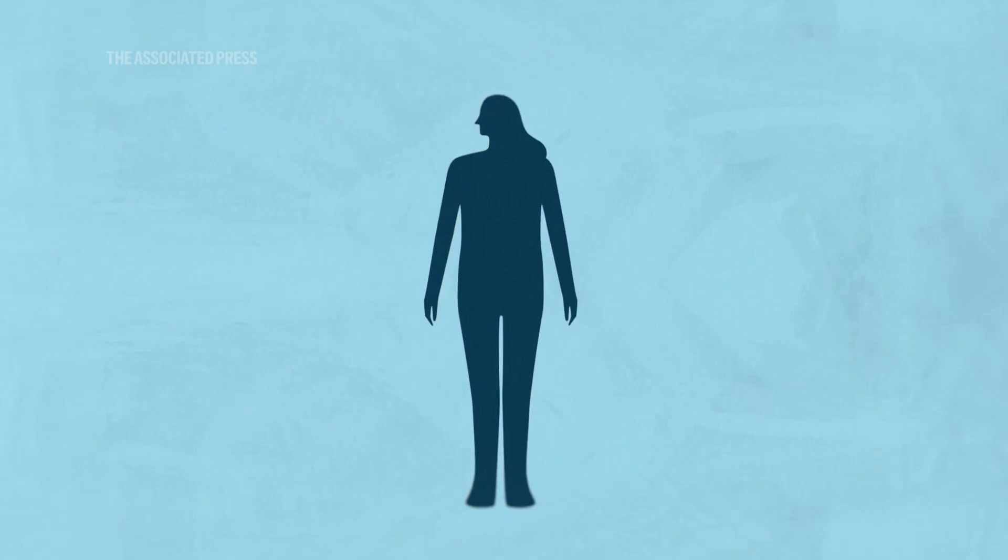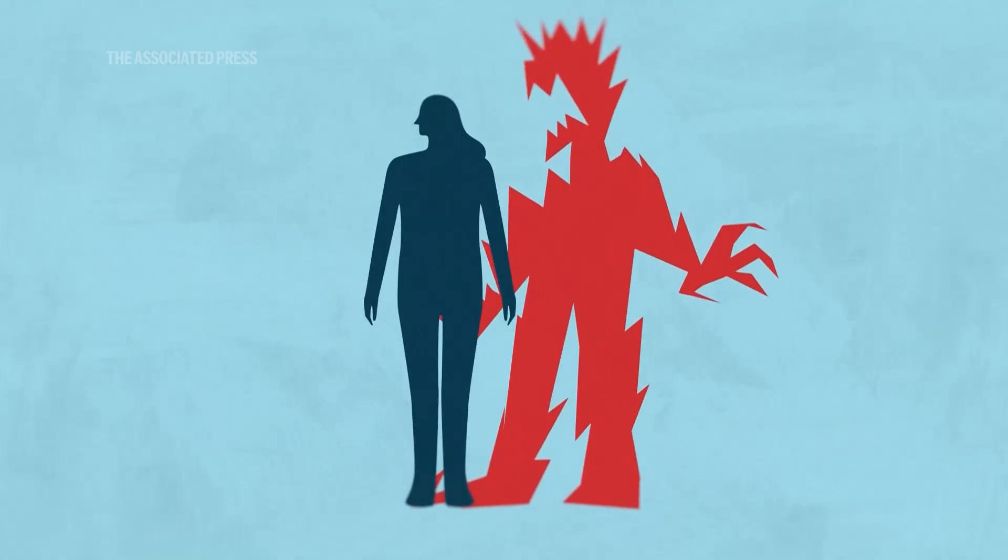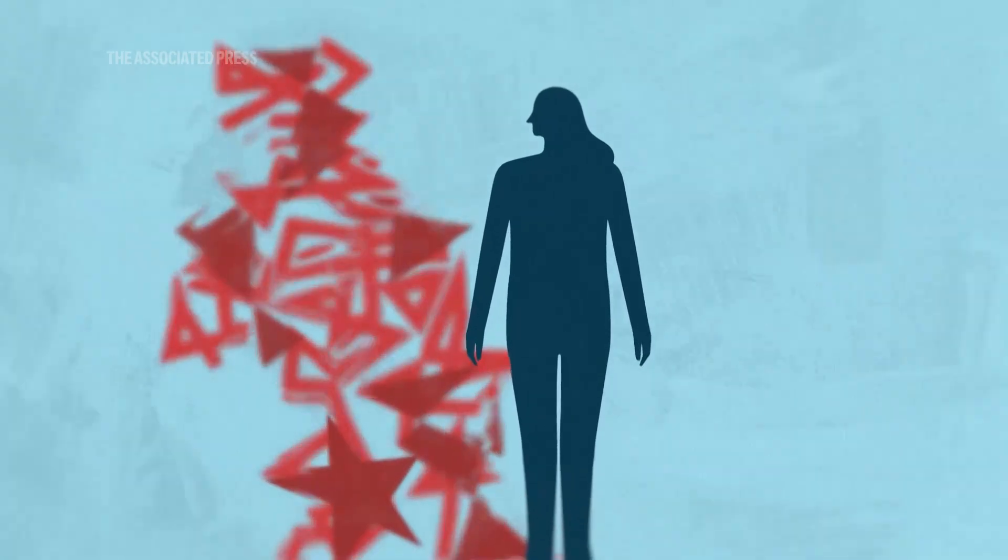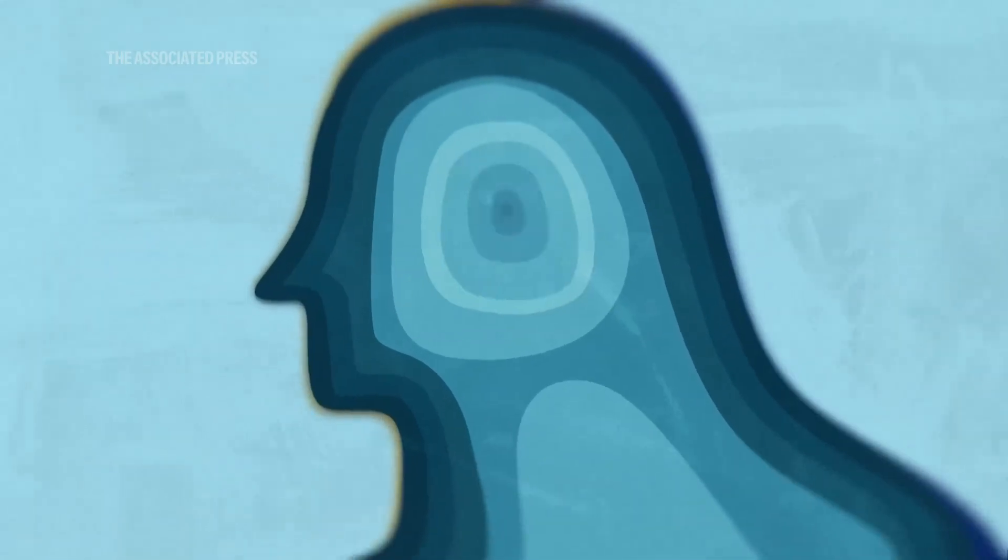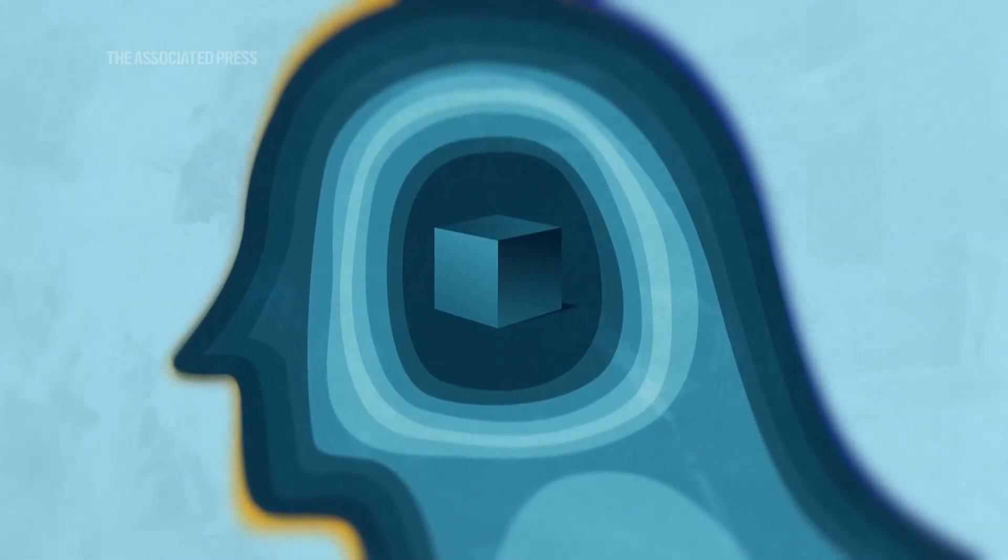Families will describe changes in personality and erratic behavior. The symptoms get at deep, mysterious black box facets of what makes us us, and that's what's impaired in these conditions.